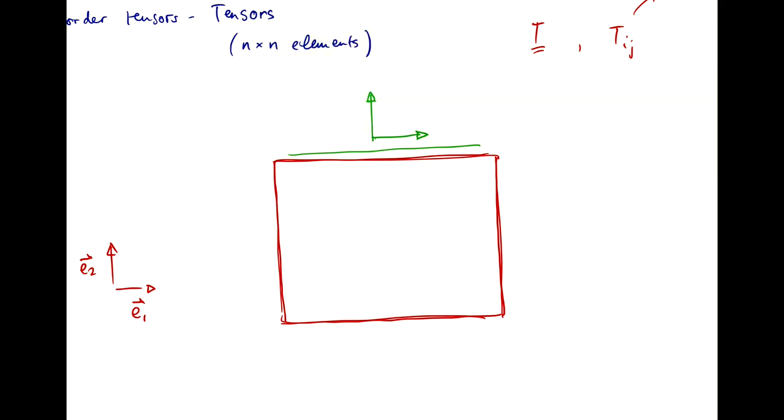The first one is the orientation of the surface itself, and that is always defined by the direction of the normal. So, the normal to the surface is N, and it is in the same direction as E2.